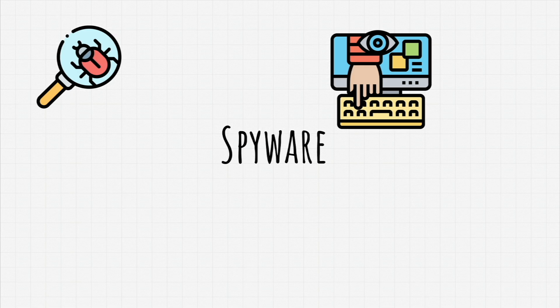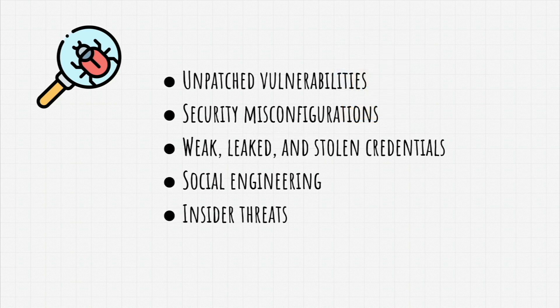Also important to mention are the ways that malware can spread. There are five most common ways: it can spread through unpatched vulnerabilities, security misconfigurations, weak, leaked, or stolen credentials, social engineering, and insider threats.